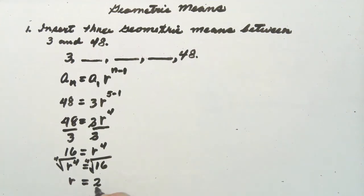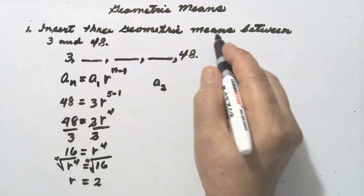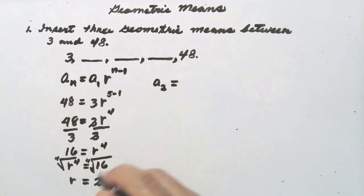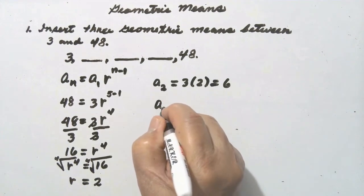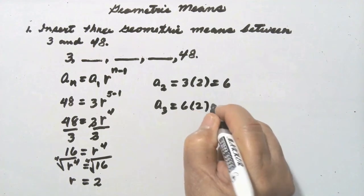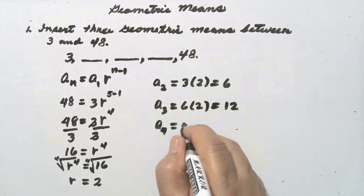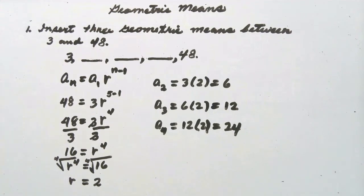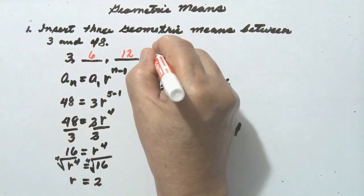So our common ratio is equal to 2. We can now solve for a sub 2, which represents the first missing geometric mean. A sub 2 is equal to a sub 1, which is 3, multiplied by the common ratio 2, so 3 times 2 is equal to 6. Then a sub 3 is equal to 6 times 2, which is 12. And a sub 4 is equal to 12 times 2, which is 24. So the missing geometric means are 6, 12, and 24.